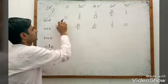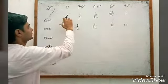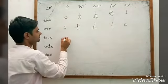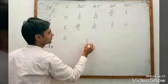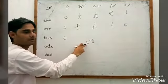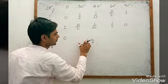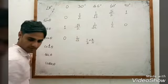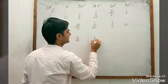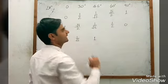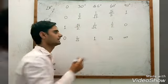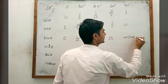Next is tan θ, and we know tan θ = sin θ / cos θ. For 0°: 0/1 = 0. For 30°: (1/2) / (√3/2) = 1/√3. For 45°: (1/√2) / (1/√2) = 1. For 60°: (√3/2) / (1/2) = √3. For 90°: 1/0 = infinity, meaning not defined.